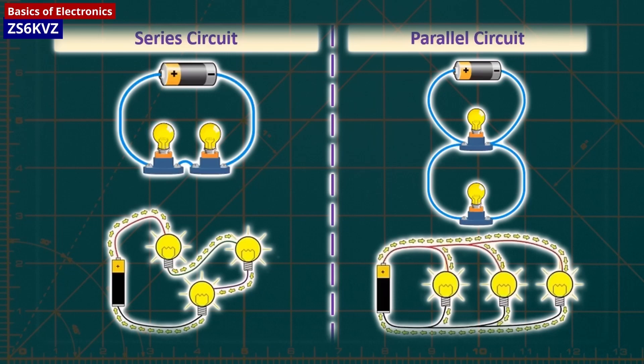In the circuits on the right, the lamps are connected in parallel with the battery. In parallel circuits, all loads have the same voltage.